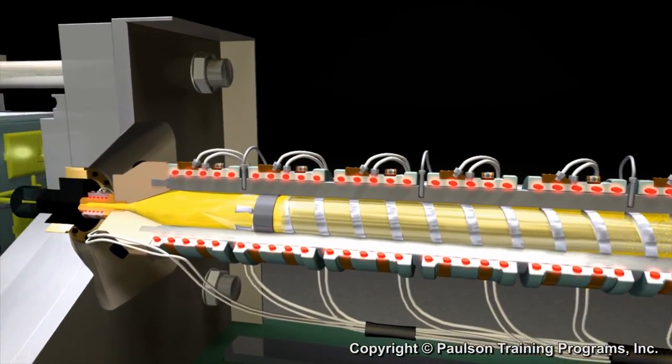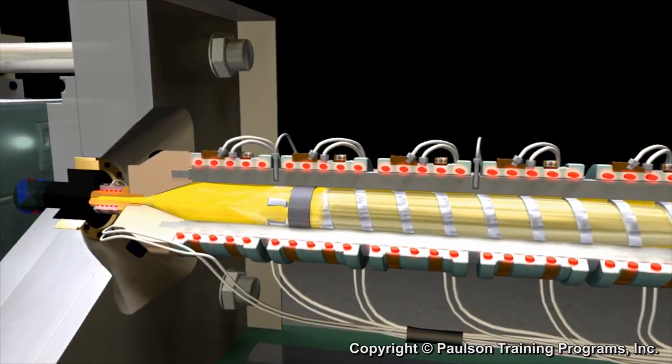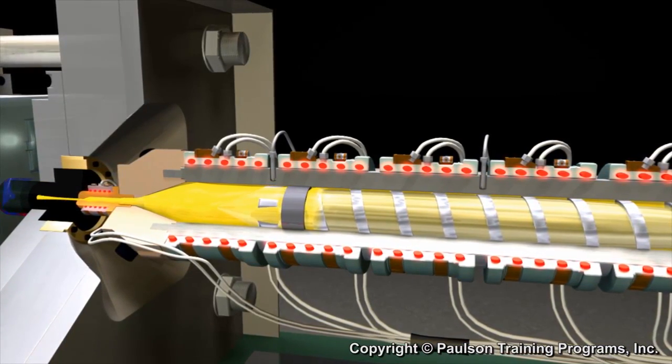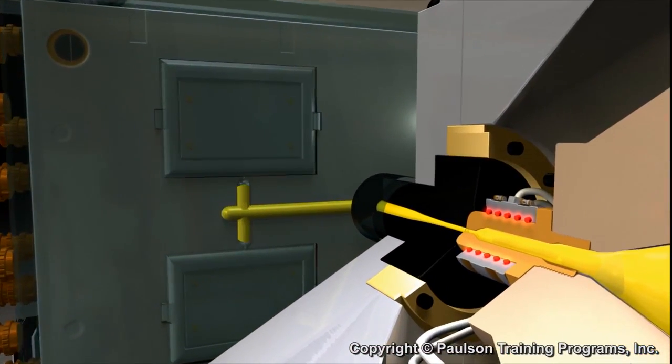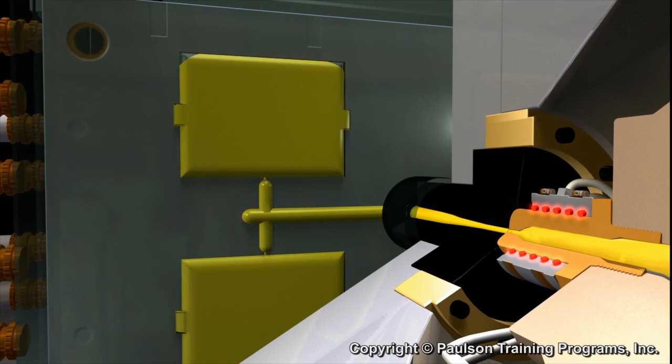When the set volume of plastic ahead of the screw accumulates, the screw stops rotating. Then the screw, acting as a plunger, pushes the melted plastic out of the injection barrel through the nozzle and into the mold. This is the fill phase of the process.